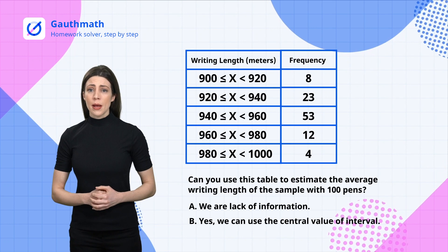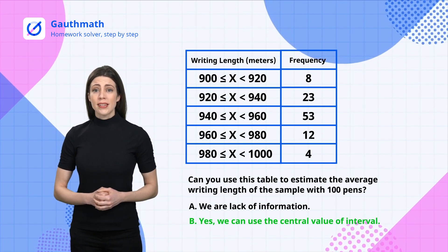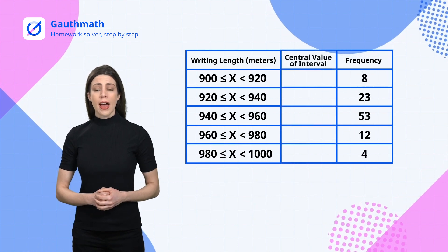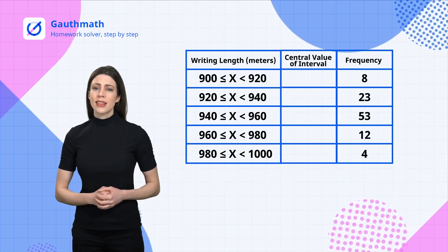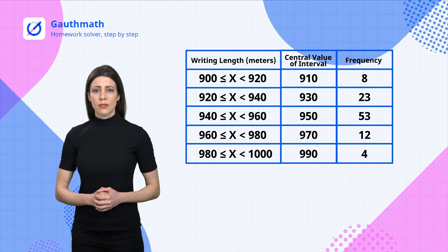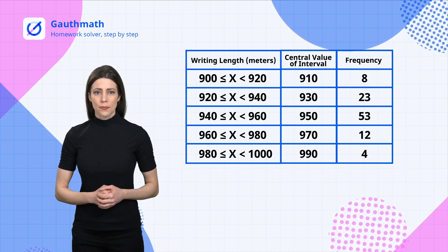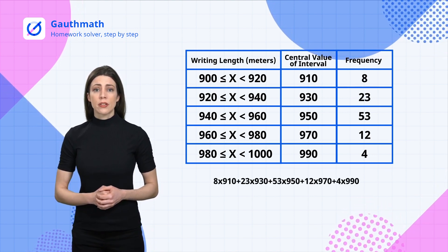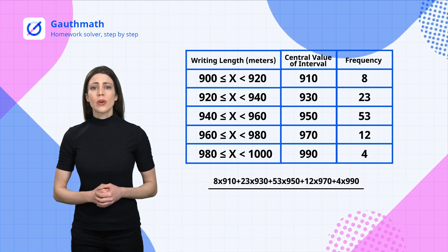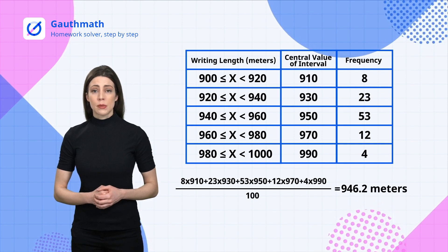average writing length of the 100 sample pens? Yes, the answer is B. If we're able to estimate the average value of each interval when specific data is not given, the central value of each interval can be used to calculate the sample average. More specifically, use the central value of each interval as this interval's average, then use frequency as weight. Add up the products of each interval's frequency and central value, divided by the amount of the samples, which is 100 in this case. The result is 946.2 meters.